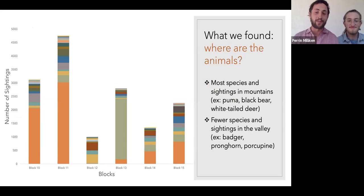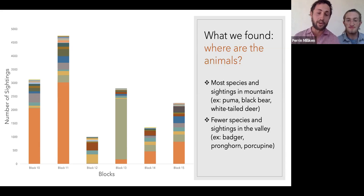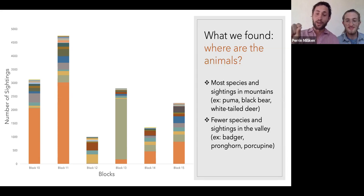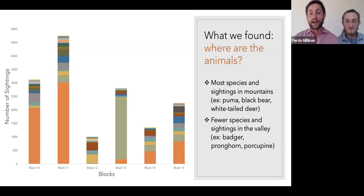Now on to the animals. The mountainous blocks typically had the largest amount of sightings and abundance of different species, so blocks 10, 11, and 15 really stood out for that reason. There are a lot of species in block 13, but a particular rodent that likes to use the wood right in front of one camera site as a little highway may have skewed the results there. The San Rafael Valley was the only place where we saw animals like badgers, pronghorns, and porcupines. Whereas in blocks 10, 11, and 15, we saw more rare apex predators like black bears and pumas, as well as a lot more white-tailed deer.